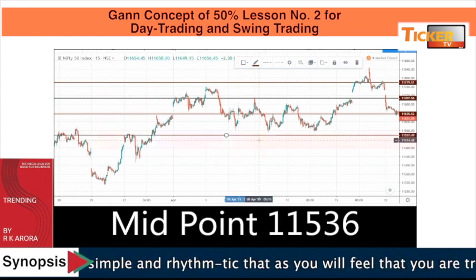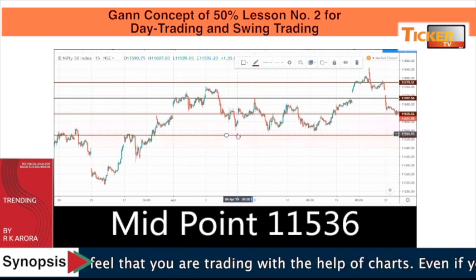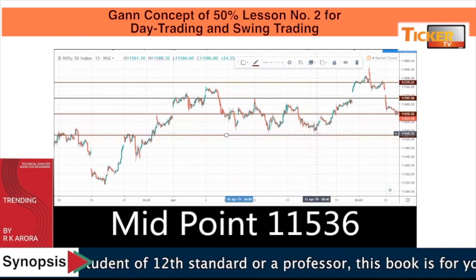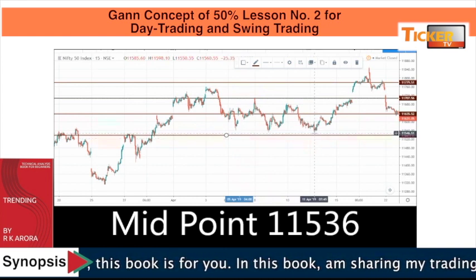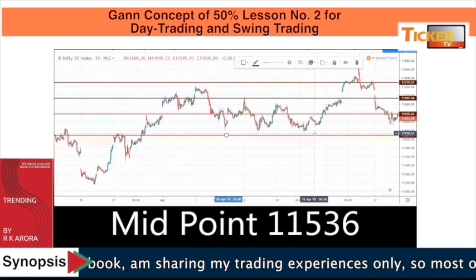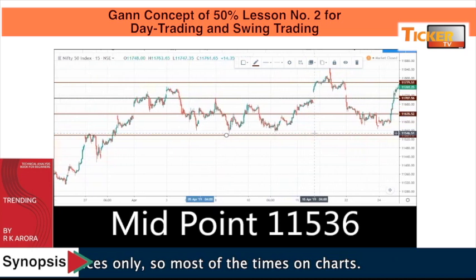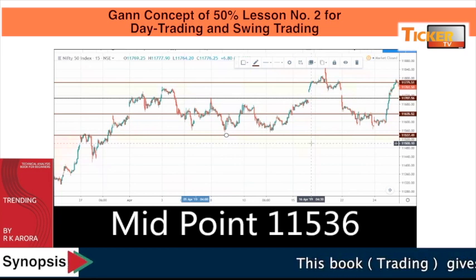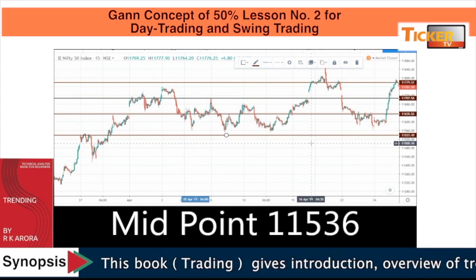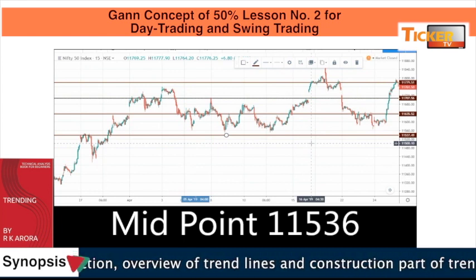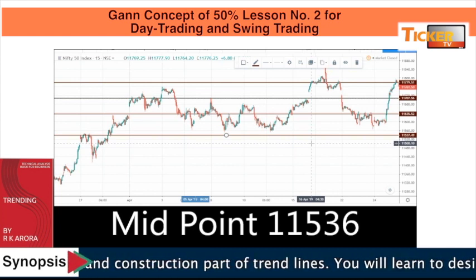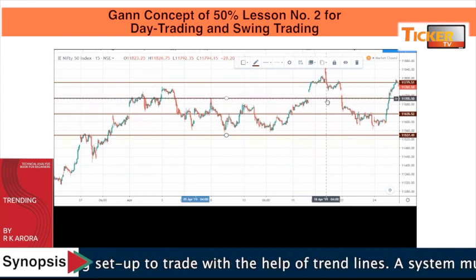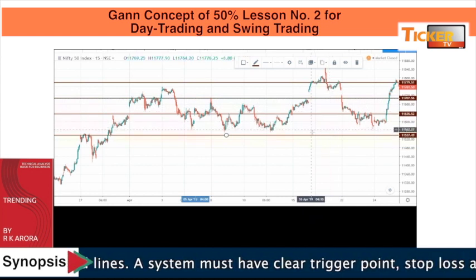The midpoint we got is 11,536. Let's draw this line. Oh my god — this is the midpoint, and the market tried to touch this level once, twice, thrice — multiple times the market tried to come closer to our midpoint, and from there only it bounced back. So the important level for us is 11,536. Whenever the market breaches 11,537, it means there will be a new journey southward. Until it is above that, we are in a bullish mode.